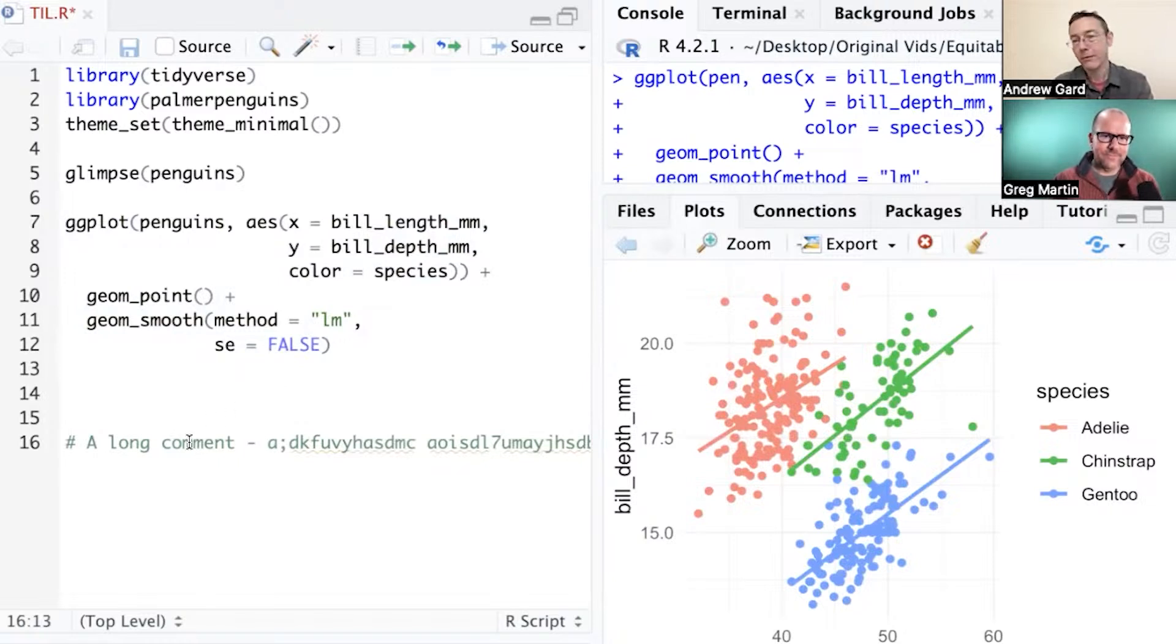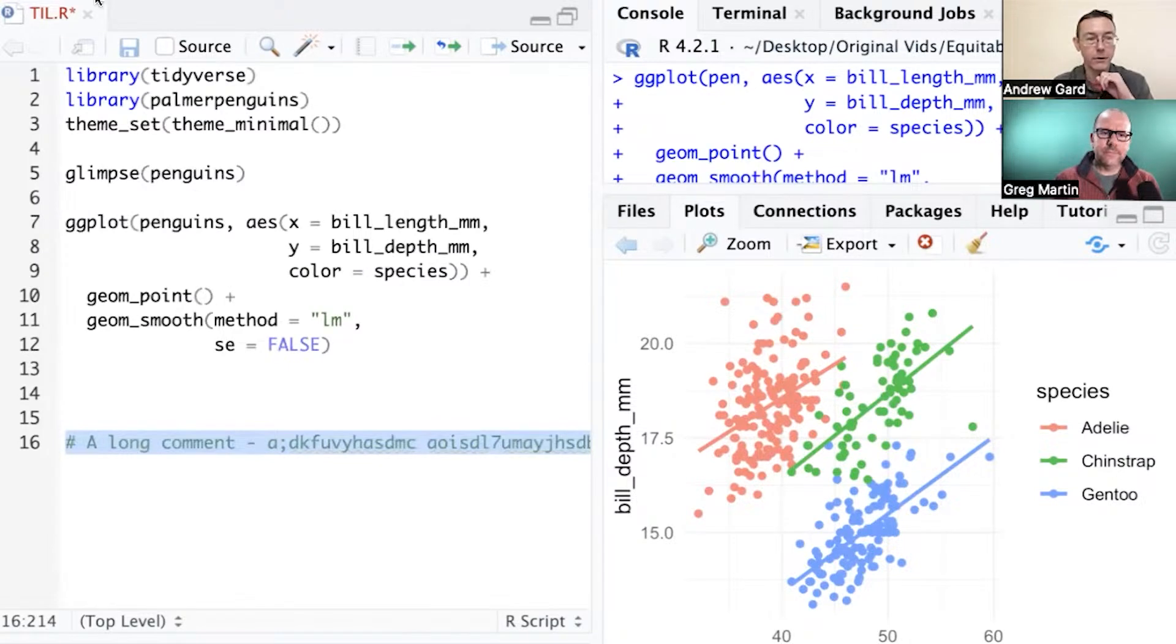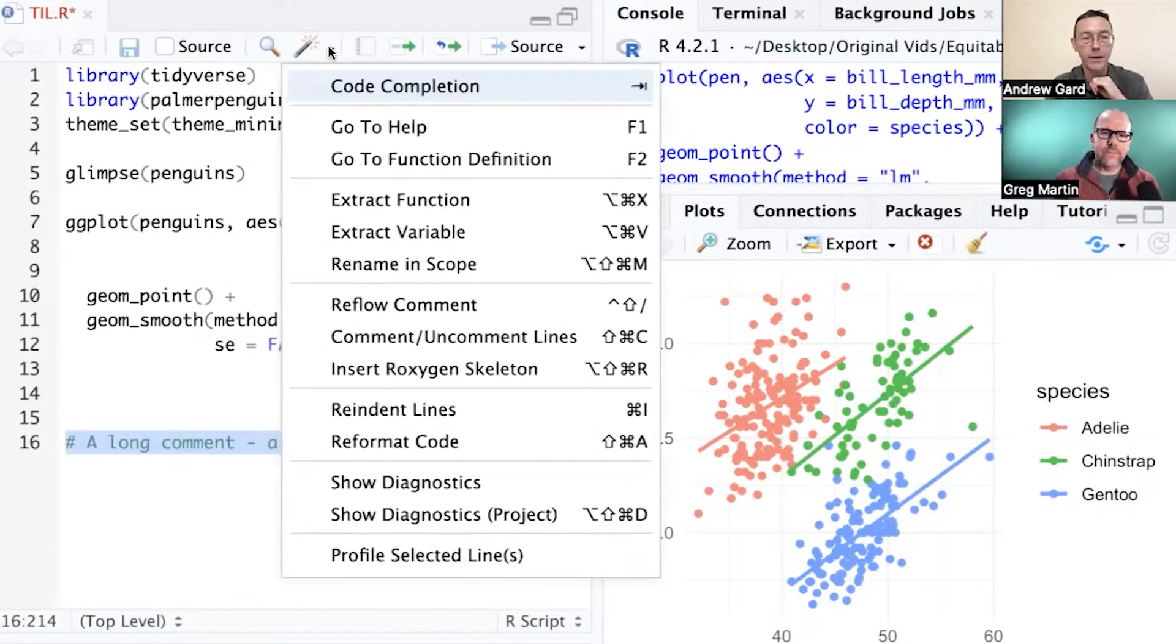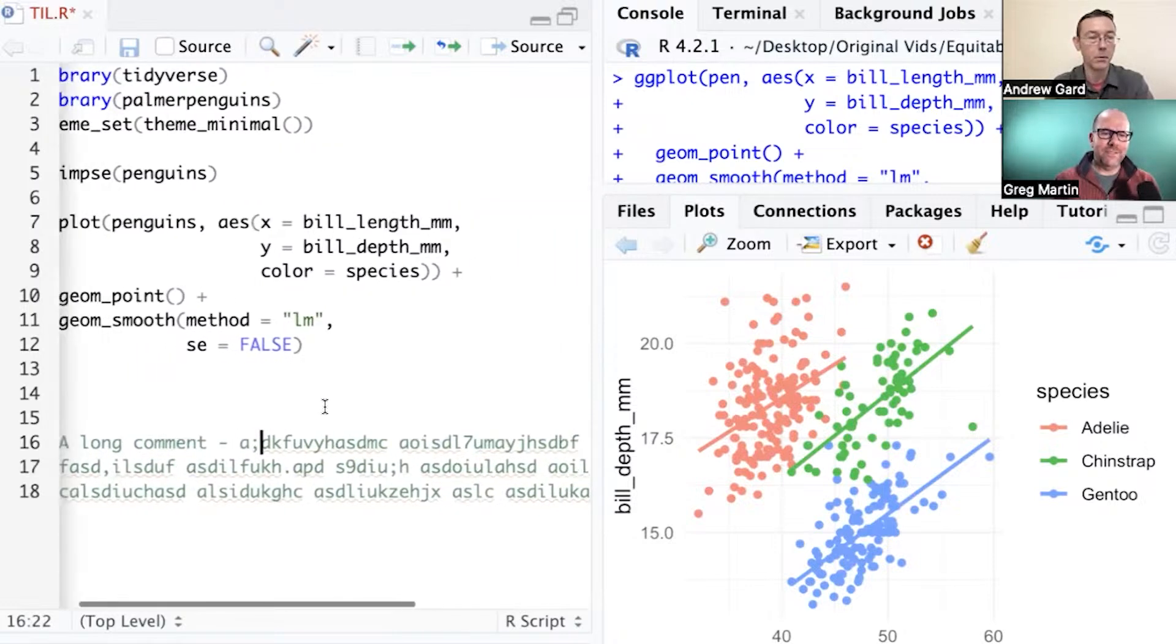Similarly, sometimes you'll have long comments and I find myself hitting enter and then another hash in the middle of the comment just to keep things aligned. And it breaks up my thoughts in ways I'm not thrilled with. But you can do a similar thing here. I'll just highlight my very long comment and then go to reflow comment. And there's a keyboard shortcut for that as well. Nice.